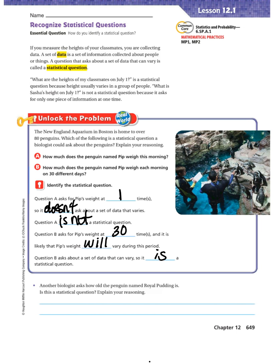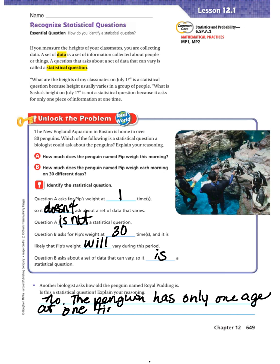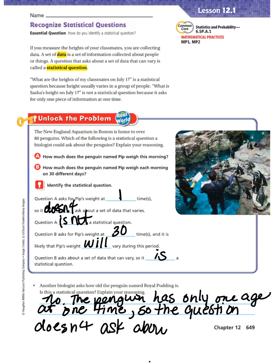Another biologist asked: 'How old is the penguin named Royal Pudding?' — that's a funny name! Is this a statistical question? No. The penguin has only one age at one time, so the question doesn't ask about a set of data that varies. Therefore, it is not a statistical question.